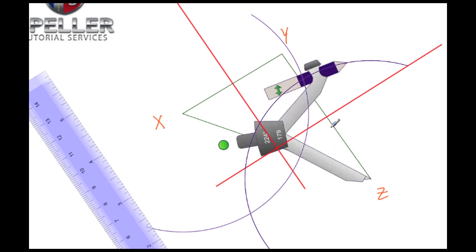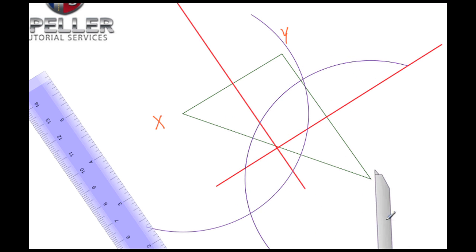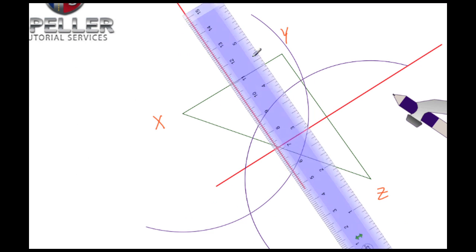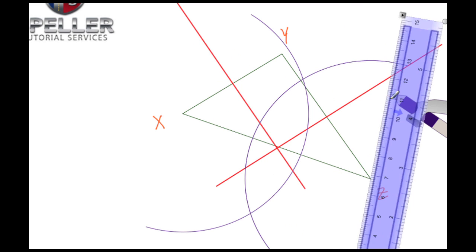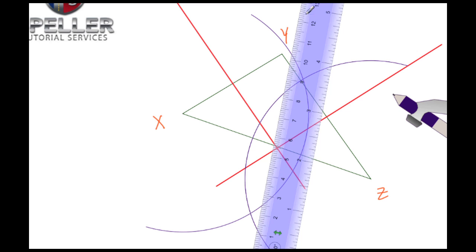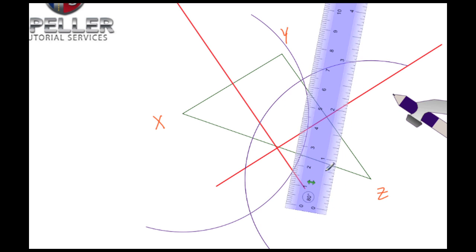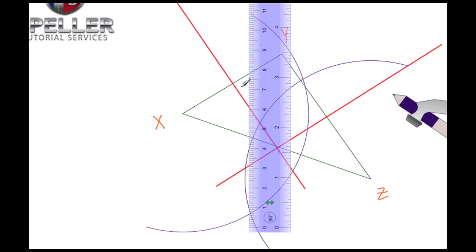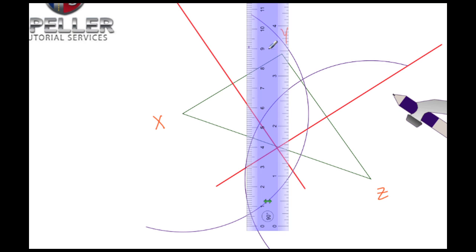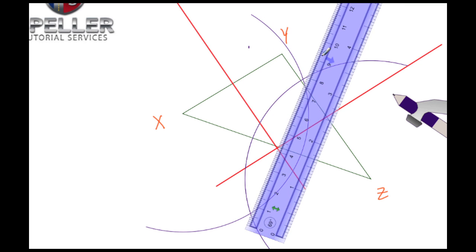Again, we're looking for the intersections of those two arcs. Let's place this straight edge so that we can draw a line through those two points. Let's place this here and turn it.